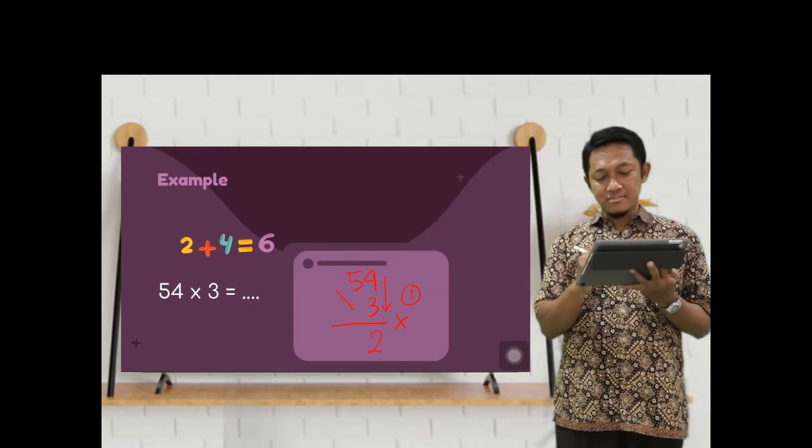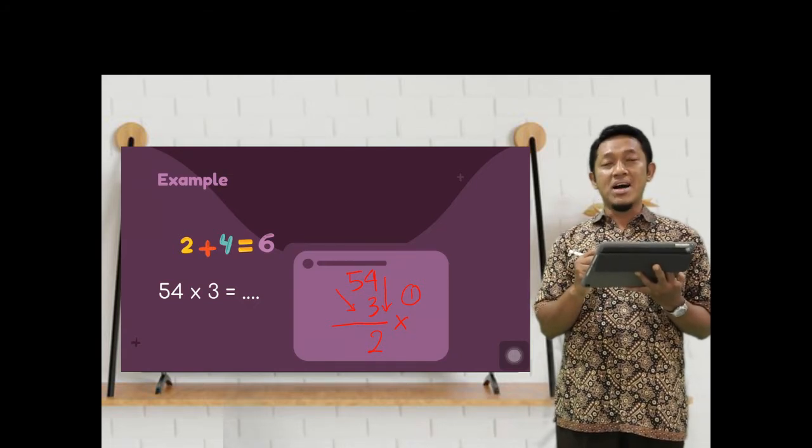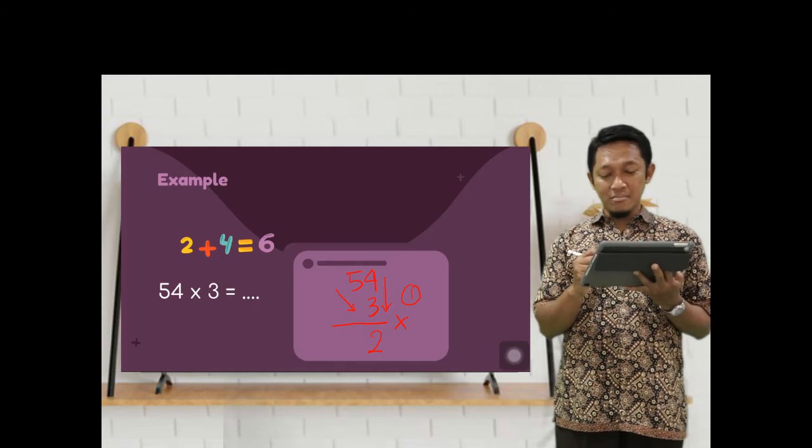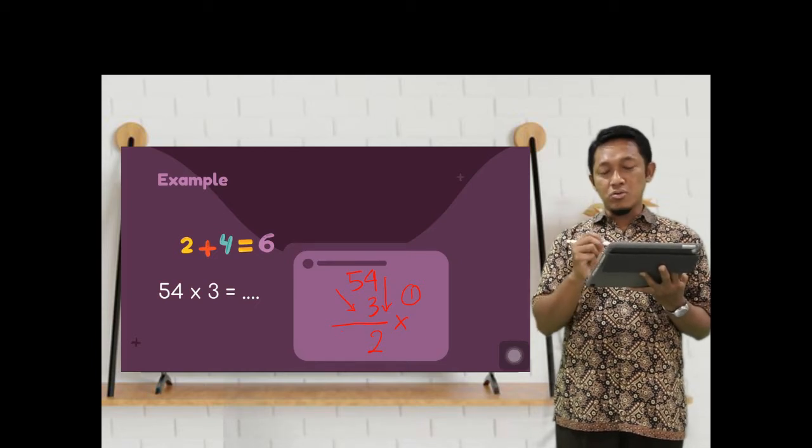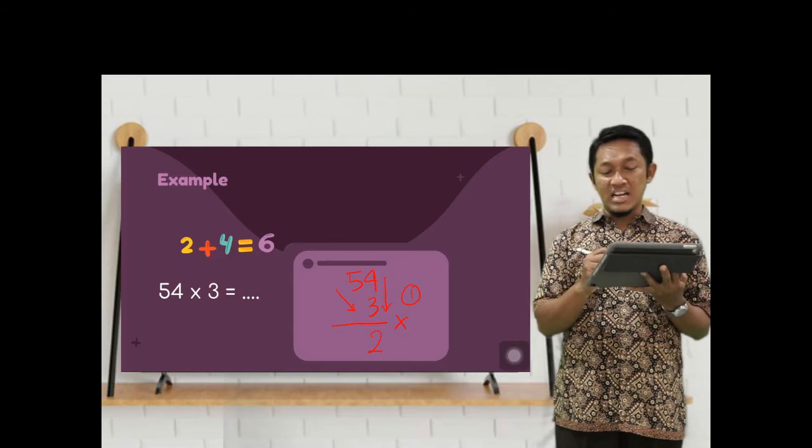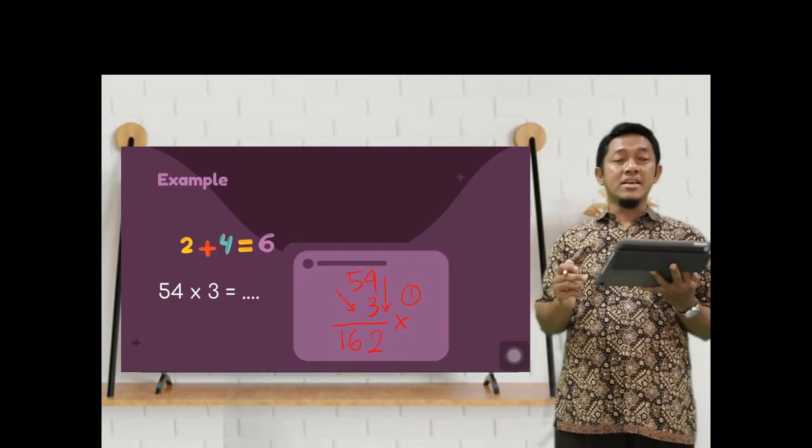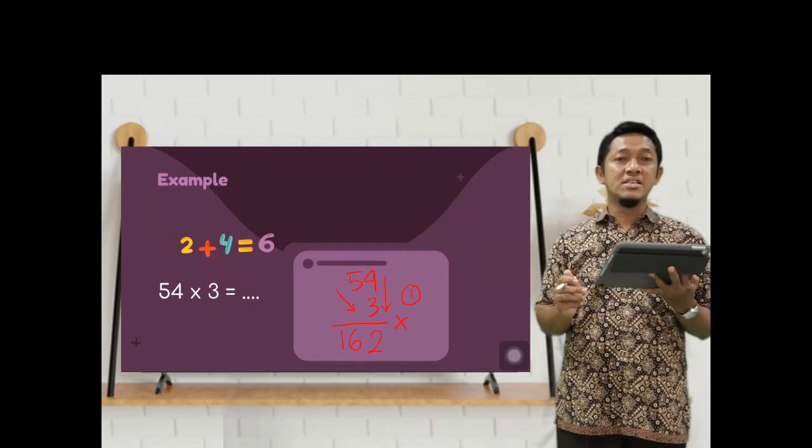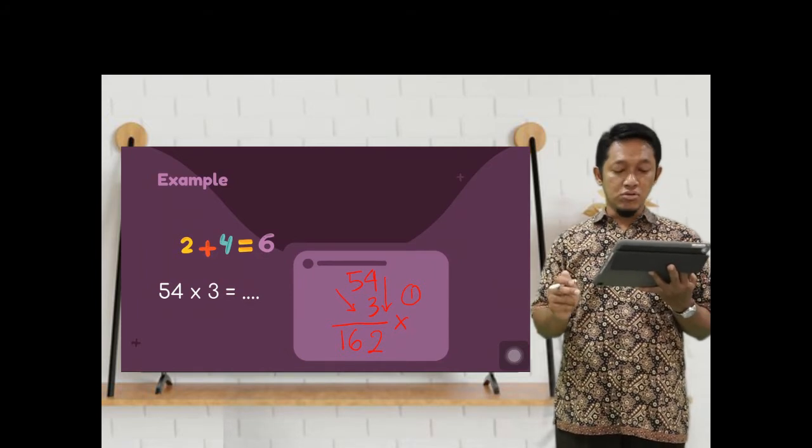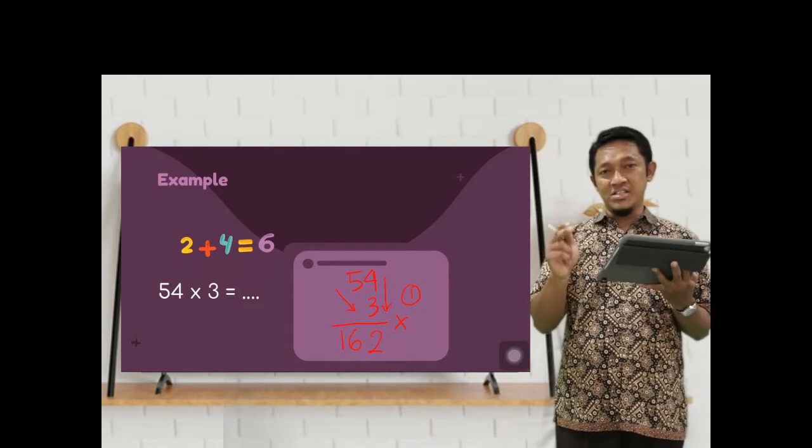Next, diagonal. 5 times 3, 5 times 3 is 15. Don't forget to add with the saving number. 5 times 3, 15 plus 1 is 16. So the result is 162. 162. Easy, right?